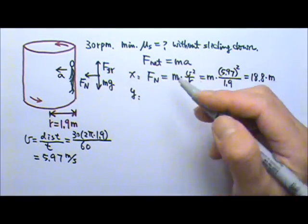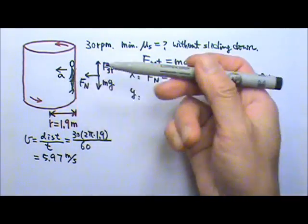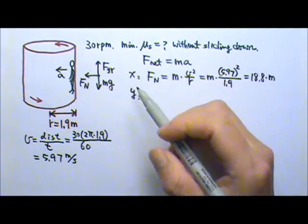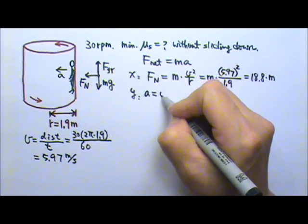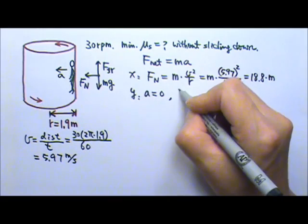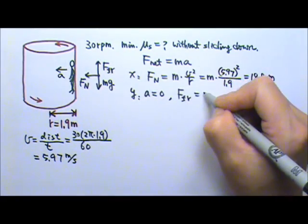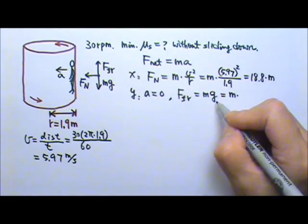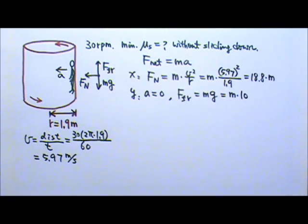The y direction. What is the acceleration in the y direction? This acceleration has no y component. So the y direction acceleration is 0. That means the upward and downward forces, they must be equal. So that means M times G. I'm going to use 10 for G. We leave the M there.